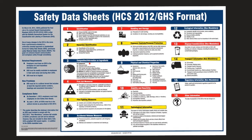Number three is composition — what's its formula, what's it made out of. Number four is first aid measures: if this gets on you, if you breathe it, if you touch it, if you get it in your eye — it's going to tell you what to do. Number five is firefighting measures. If my lab were to catch fire, firefighters are going to want to see my SDS sheets to know what chemicals I have and how to fight that fire, because some chemicals you can't just spray water on — the fire would get worse.